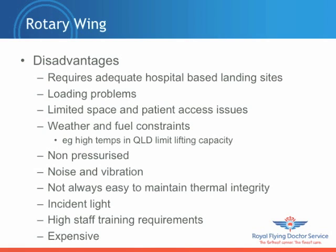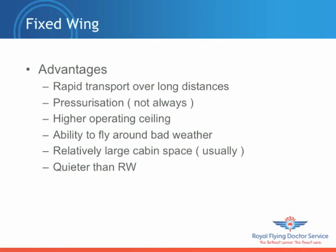Fixed wing. One of the main advantages is the capacity to affect rapid transport over long distances. Pressurization is generally an option, though not always, as it clearly is platform dependent — but the ability to pressurize can be important in mitigating the physiological consequences of altitude. Fixed wing aircraft operate at a higher ceiling and have the ability to fly around bad weather, which helicopters can often find extremely difficult. There is generally a relatively larger cabin space in the fixed wing environment, and they are also quieter operating environments to work in.